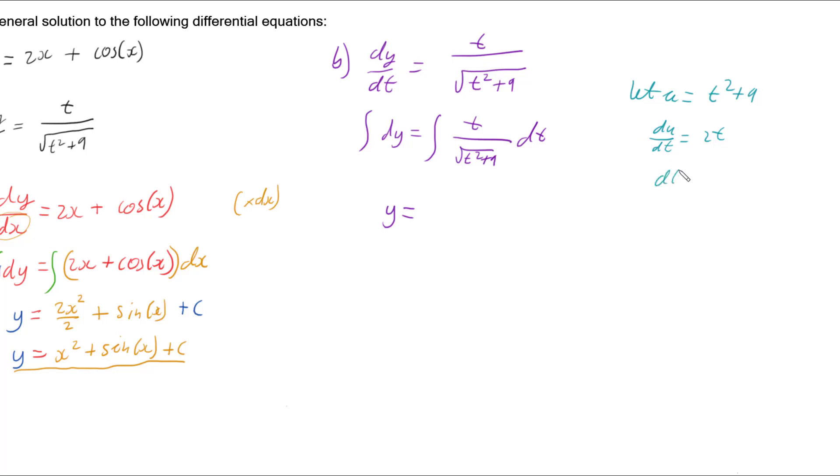So dt equals du over 2t. So we have t over the square root of u multiplied by du over 2t. So our t's cancel out. And we still have our integral, we haven't done that yet. And so we take the half out the front and we get the integral, and we'll change that u square root to u to the power of negative a half du.